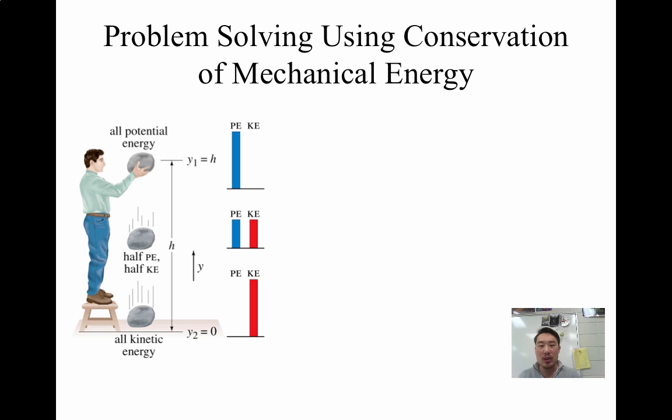Now, problem solving using conservation of mechanical energy. Here's a classic example. For one reason or another, you decide to drop a rock. That's stupid. Anyways, at the beginning, you only have potential energy. In this case, we represent that with the blue bar. And as you drop it, it turns into kinetic energy halfway through. And it's always going to be half and half. And at the end, right as it hits the floor, you're still moving it as you hit the floor. All that potential energy turned into kinetic energy.